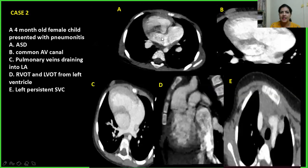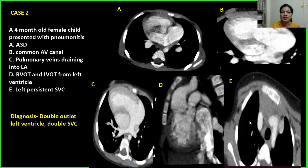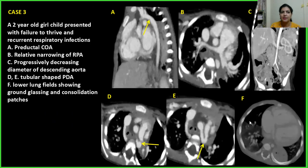Case 2: A four-month-old female child presented with pneumonitis. Findings included ASD, common AV canal, pulmonary artery, and pulmonary veins draining into the left atrium. There was RVOT and LVOT both arising from the left ventricle, and a left persistent SVC. This was a case of double outlet left ventricle with double SVC.